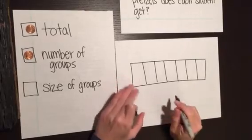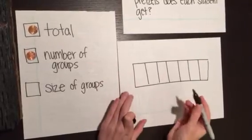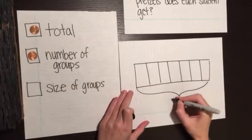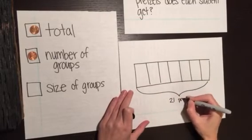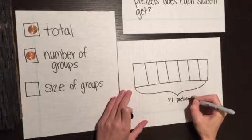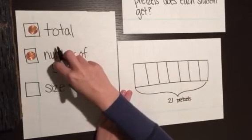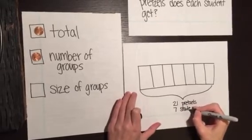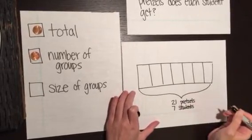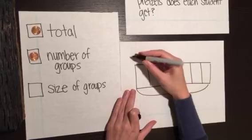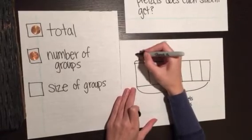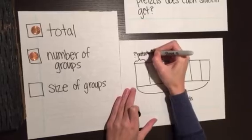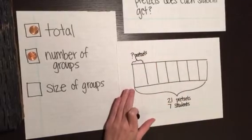Next thing I'm going to do is I'm going to label my tape diagram. So I have my total. Our total always goes on the bottom. I know that there are 21 pretzels total. We know our number of groups, seven students. Our unknown is the number of pretzels that each student gets. Question mark pretzels. Because we didn't know that when we read the question.